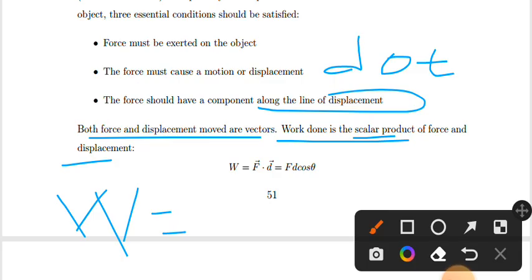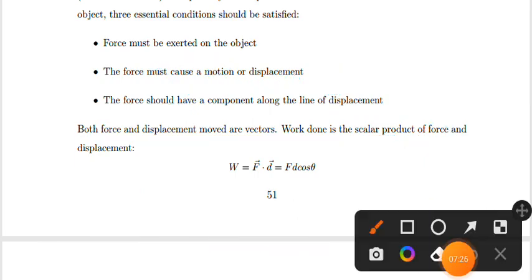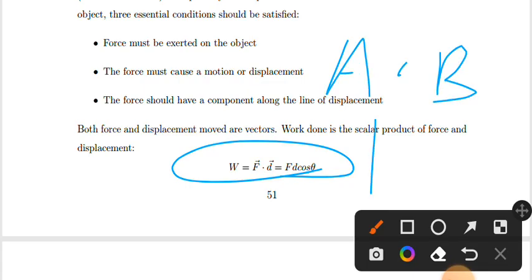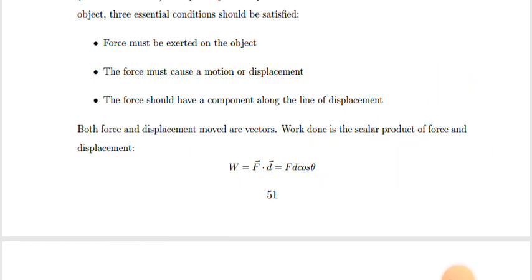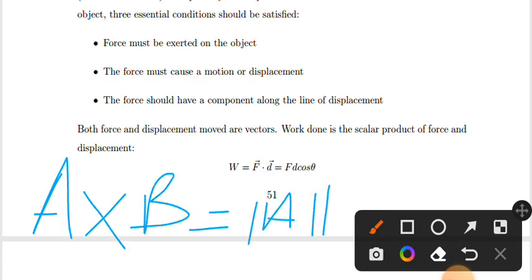Work done equals F times D times cos theta, where F is force, D is displacement, and theta is the angle between them. The cross product of vector A and vector B equals the magnitude of A times the magnitude of B times sin theta.